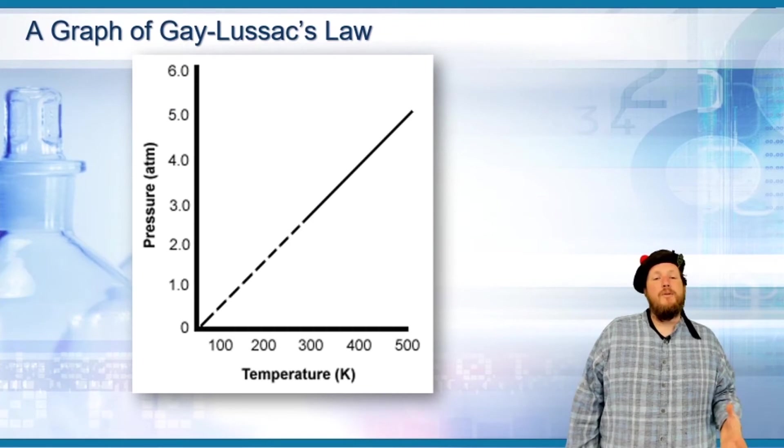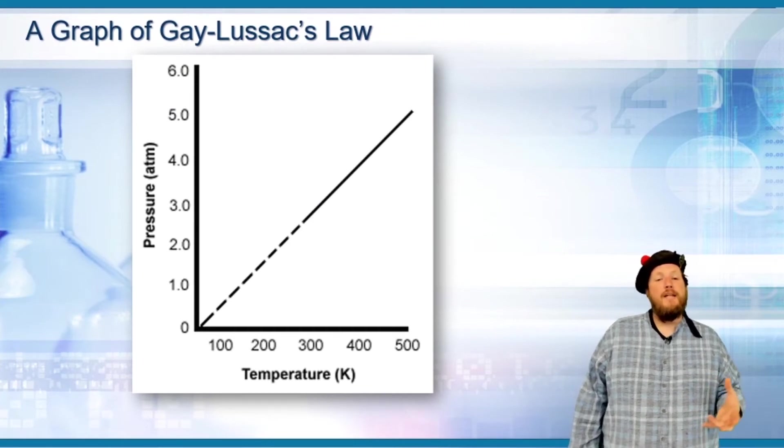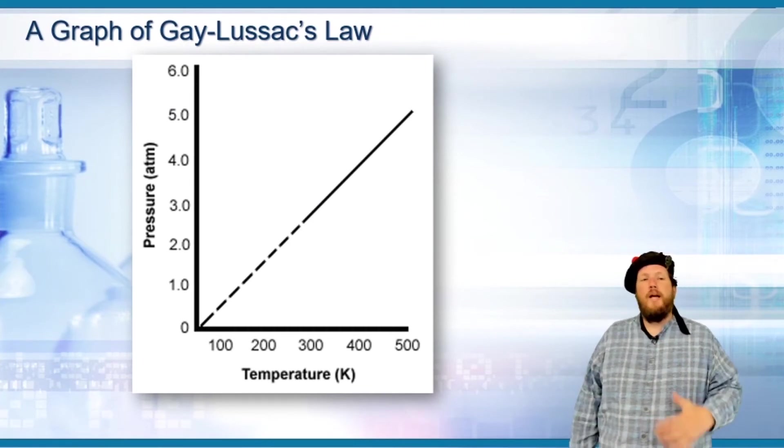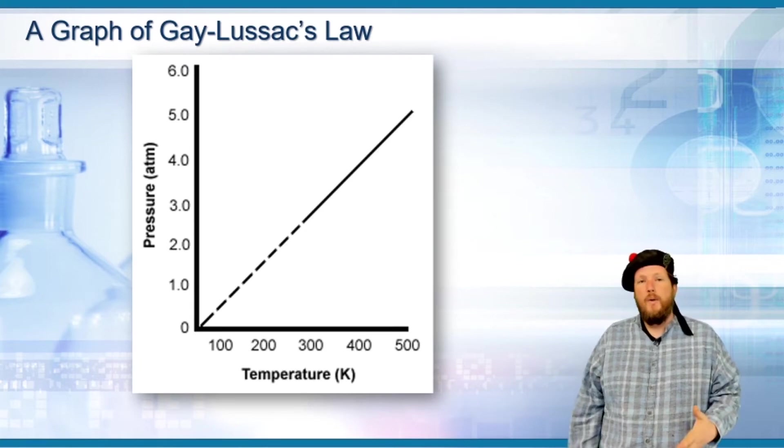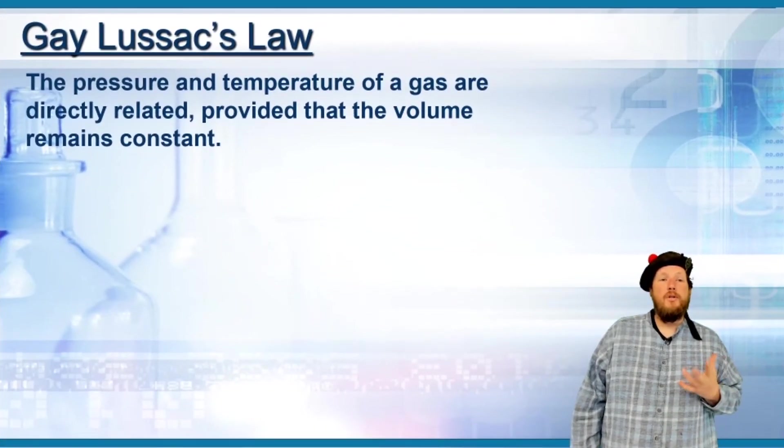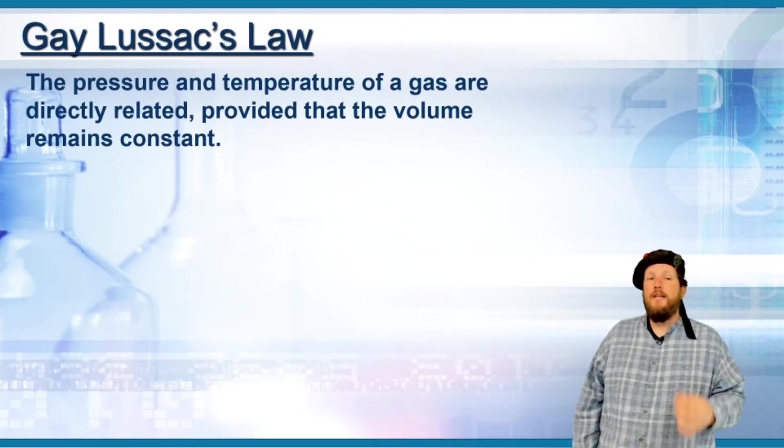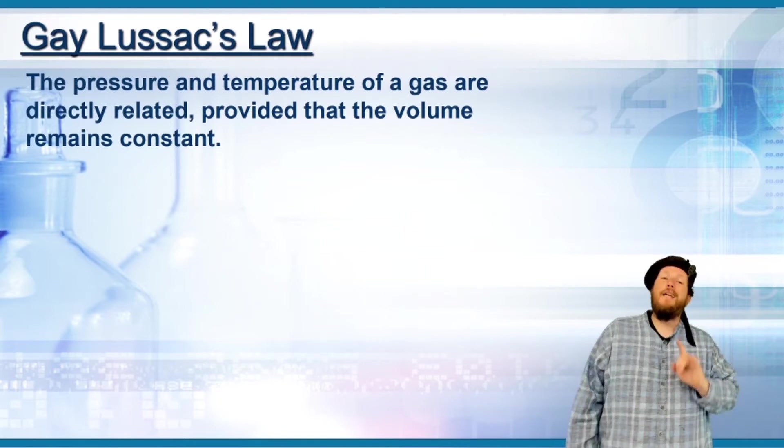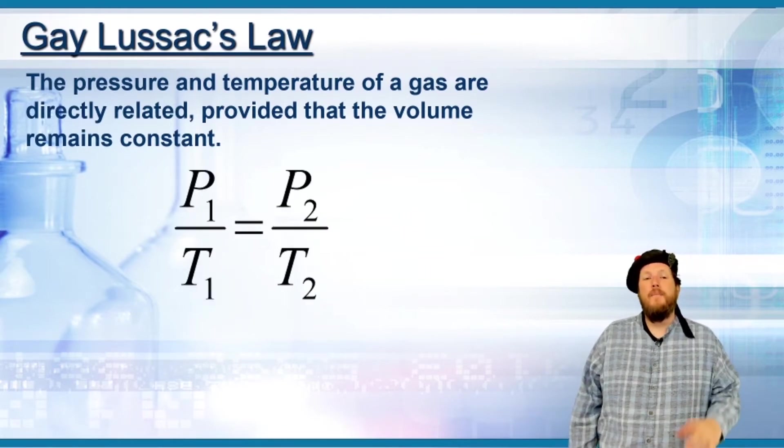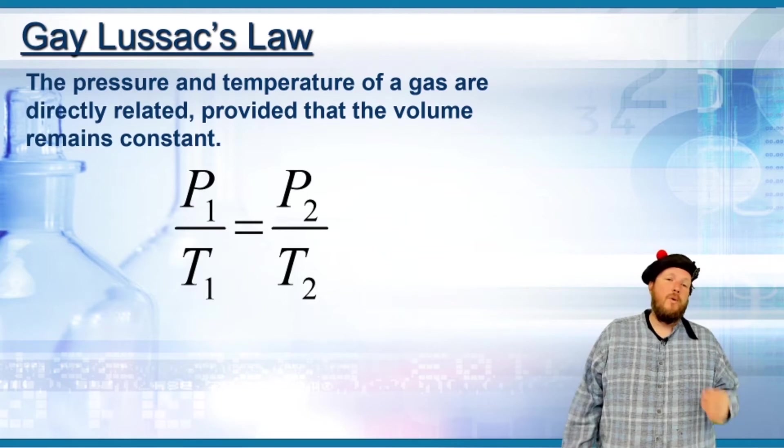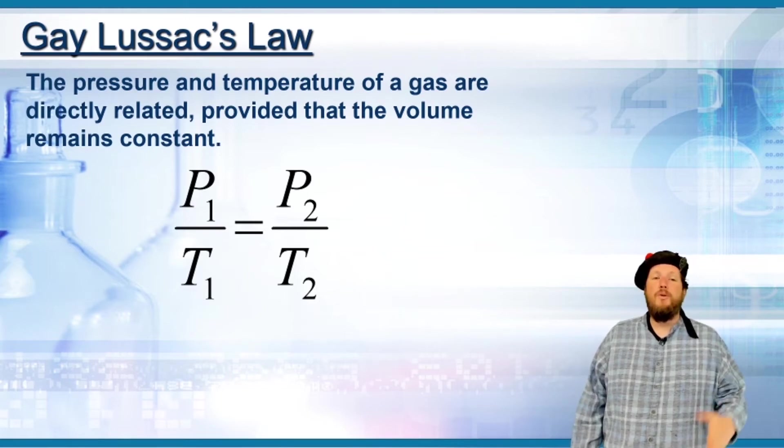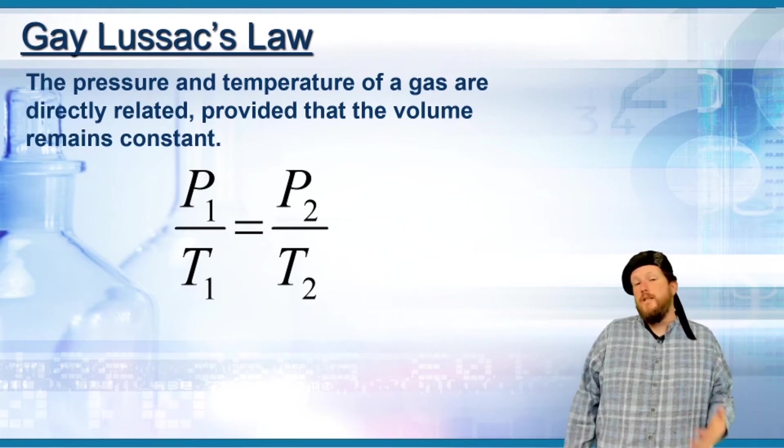This is the graph of Gay-Lussac's law that pressure and temperature are directly proportional. As one goes up, the other goes up as well. The pressure and temperature of a gas are directly related provided the volume remains constant. Again, the volume has to remain constant. Pressure one over temperature one equals pressure two over temperature two: P1/T1 equals P2/T2.